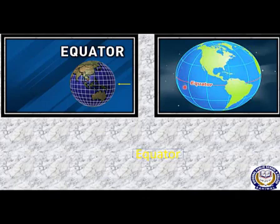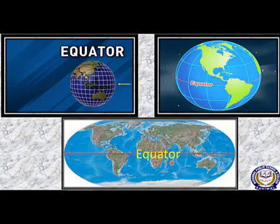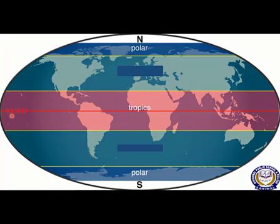What is the equator? The equator is an invisible line that runs around the center of the Earth at zero degrees latitude. You can see the equator on the world map as well as on the globe. The equator divides the planet into a northern hemisphere and a southern hemisphere.